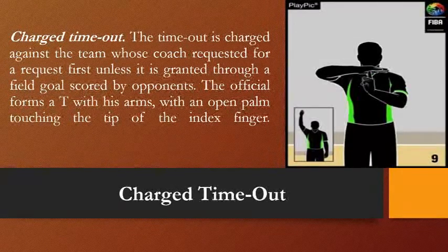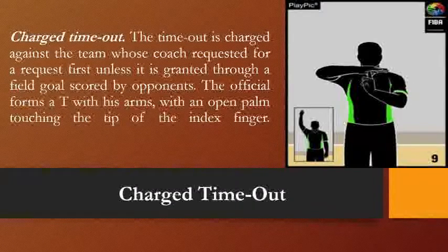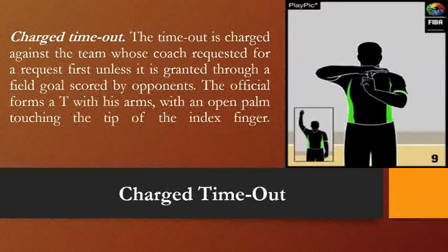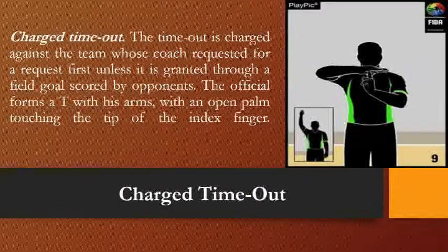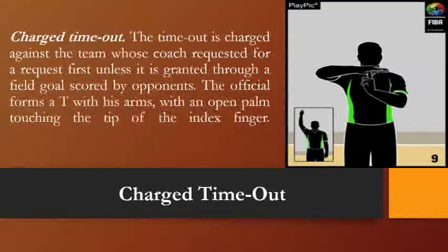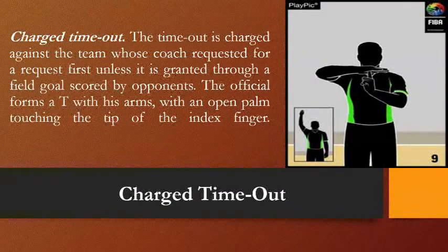Another interruption is the charged timeout. The timeout is charged against the team whose coach requested it first, unless it is granted for a field goal scored by the opponents. The official forms a T with his arms, with an open palm touching the index finger. The referee uses the stop clock signal followed by signaling the timeout. The timeout is given to the coach who requested first, and after a violation, foul, or any interruption, the coach has the privilege to call for a timeout.